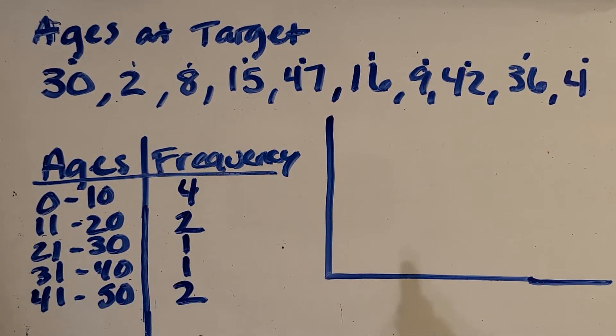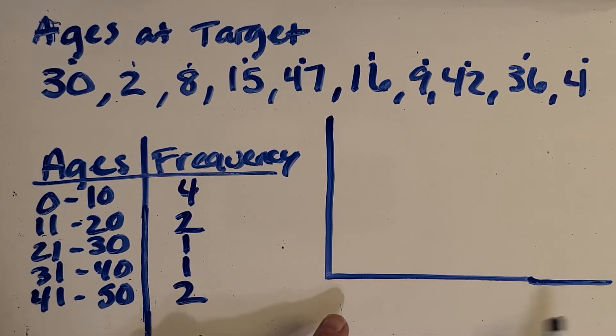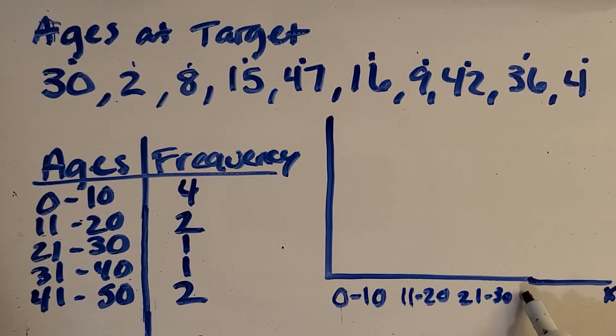Now I can put this into a histogram by using these ranges as my x-axis over here. I can have those ranges down below. So 0 to 10. That'll be its own bar. 11 to 20, 21 to 30, 31 to 40, and 41 to 50.